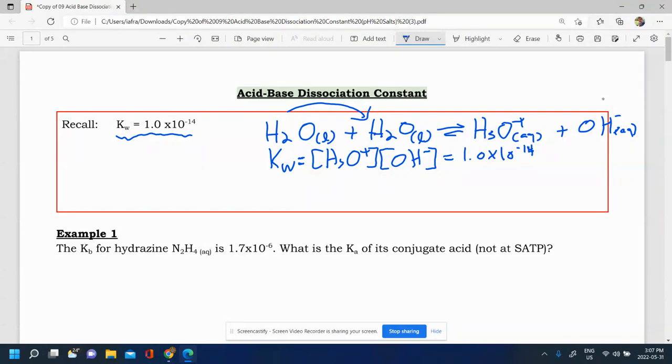And so if you know the concentration of H3O plus you can figure out the concentration of OH minus by simply doing the Kw divided by your H3O plus for example. Now another relationship that also exists from this is that of Kw being related to Ka and Kb.